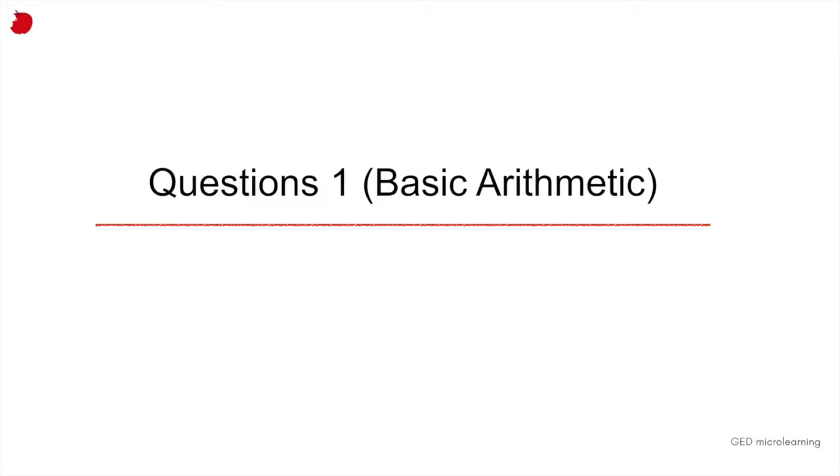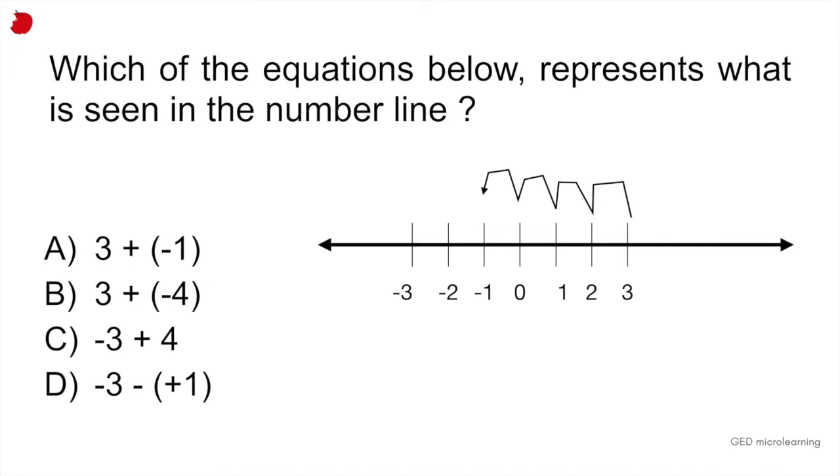Our first question today, basic arithmetic, involves number lines. It's asking which of the equations below represents what is seen in the number line. The squiggly line starts at 3 and it ends at minus 1. What they want you to realize here is that when you go from 3 to minus 1, you're actually subtracting 4.